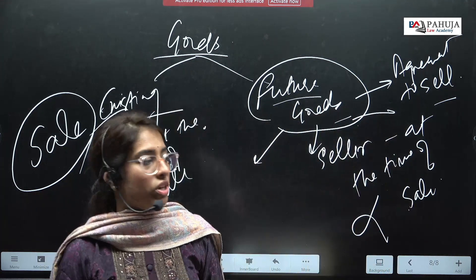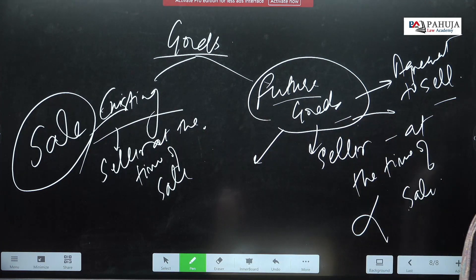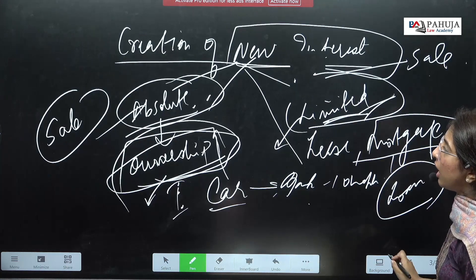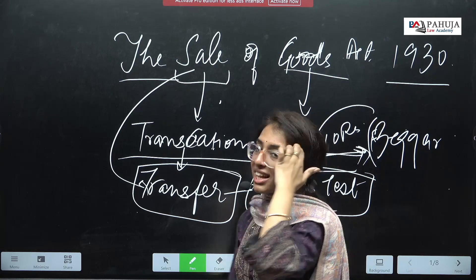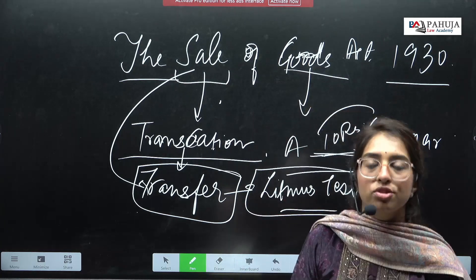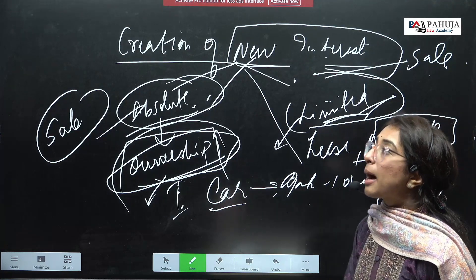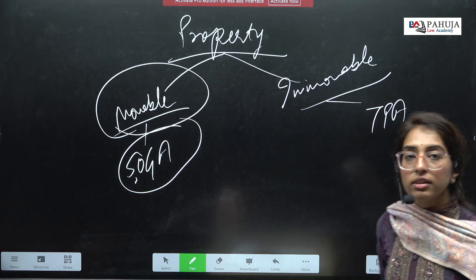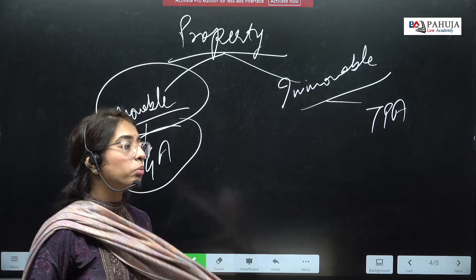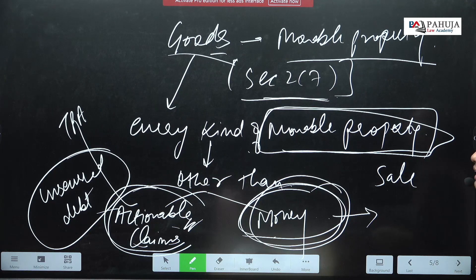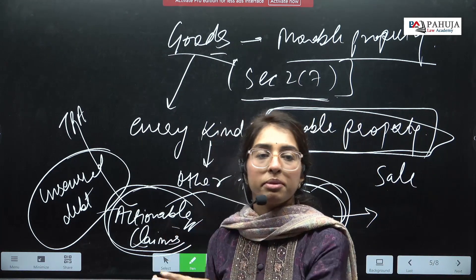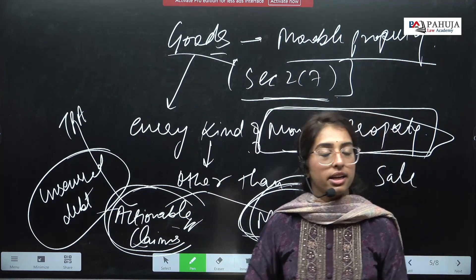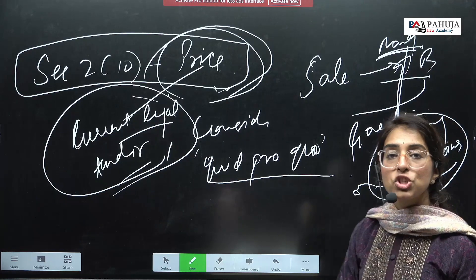Now this was the brief introduction about SOGA. Since this was a demo lecture, I'll quickly revise everything. Sale of Goods Act — sale is a transaction or transfer with creation of new interest. It can be absolute or limited. In absolute interest, ownership is transferred; in limited interest, ownership is not immediately transferred. SOGA deals with movable property — immovable property is dealt by TPA. Then we studied the definition of goods under Section 2 Clause 7: every kind of movable property other than actionable claims and money. Actionable claim is an unsecured debt.